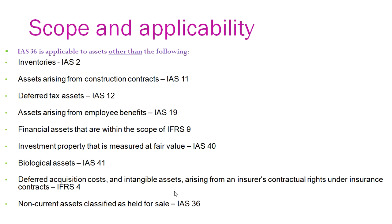Regarding scope and applicability: an asset is impaired when the sum of estimated future cash flows from that asset is less than the book value. The scope covers all different types of assets other than the following, as these are covered separately in different IAS: inventories, construction contracts, deferred tax assets, employee benefits, financial assets, investment property measured at fair value, biological assets, deferred acquisition costs, intangible assets arising from insurance contractual rights, and non-current assets classified as held for sale.